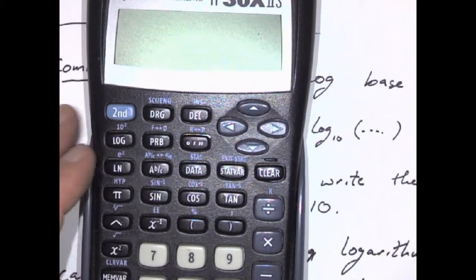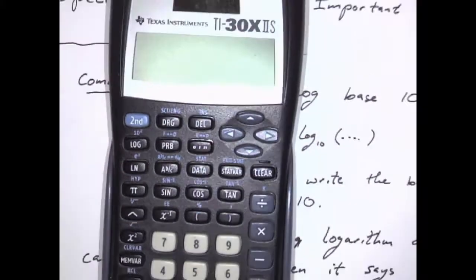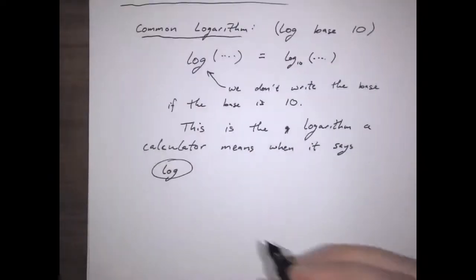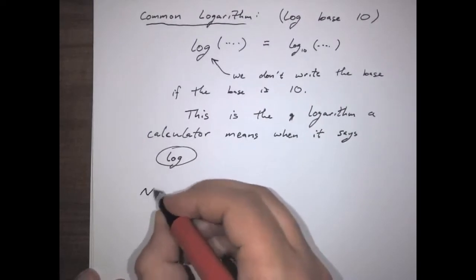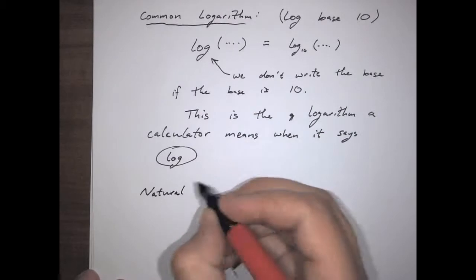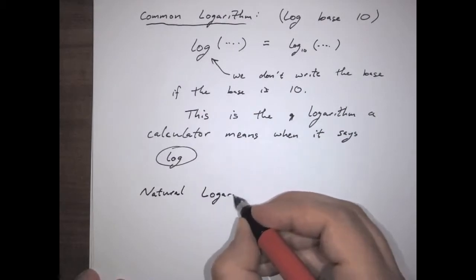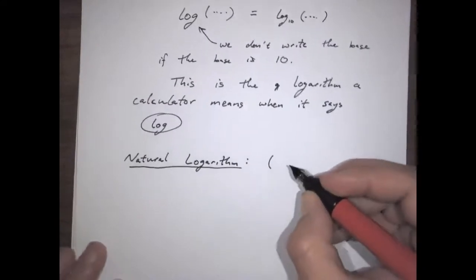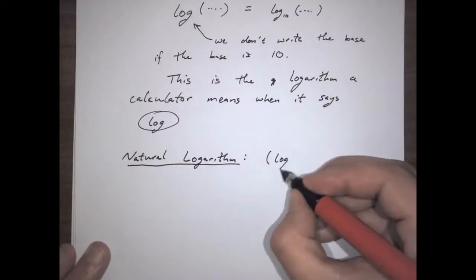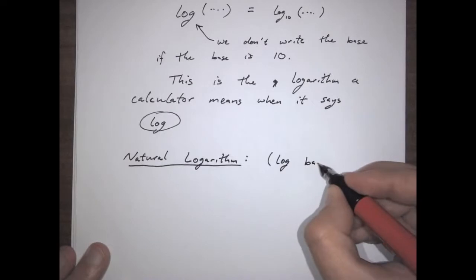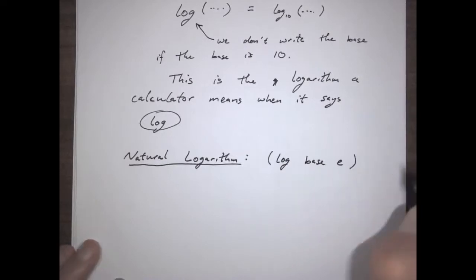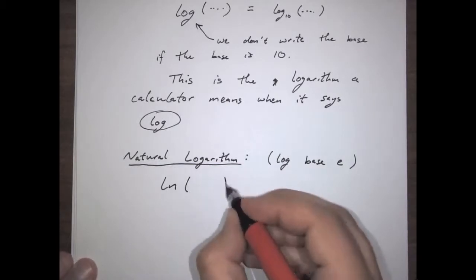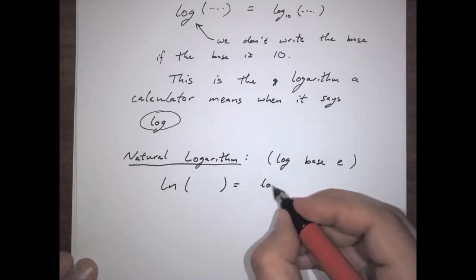For example, if you look on a calculator, notice there is a log that is not a log where you then get to give it the base — it is the log base 10. And you'll notice that it shares the button with 10 to the x, and that's because those are the inverses of each other. That's the common logarithm. And then there is the natural logarithm, which is the log base e, where e is Euler's number, as covered in section 6.1. We write ln for logarithmus naturalis, and this is equal to the log base e.